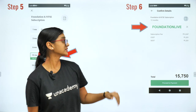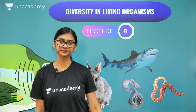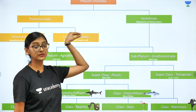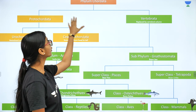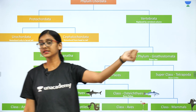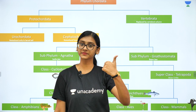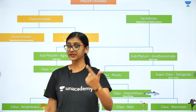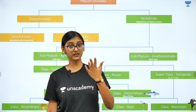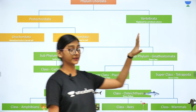Let's quickly start the class on Diversity in Living Organisms, Lecture 8. We have talked about different phyla in the previous classes. Today we'll be talking about phylum Chordata. Under Animalia we have already seen Porifera, Cnidarians, Platyhelminthes, Aschelminthes, Annelida, Arthropoda, Mollusca, and Echinodermata.